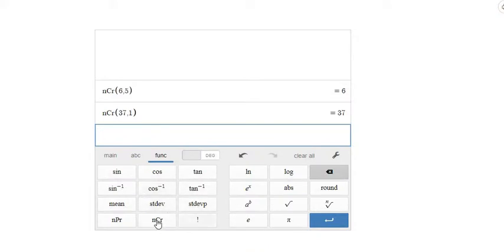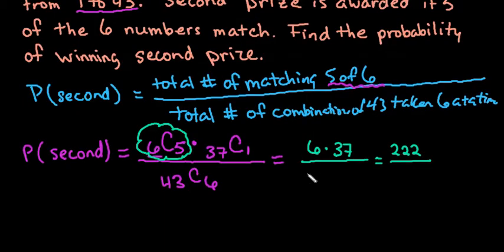Now we want to find the number of combinations of 43 things taken six at a time. So we can see that there's 6,096,454. That would be our final fraction, and you can leave it like this most of the time.